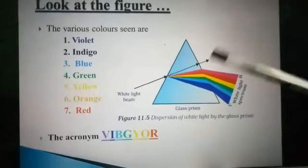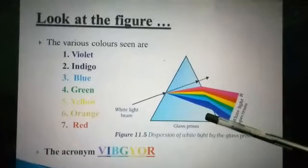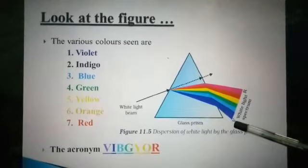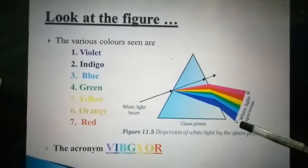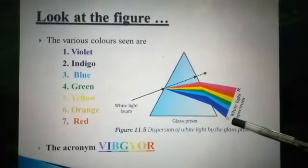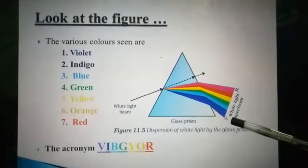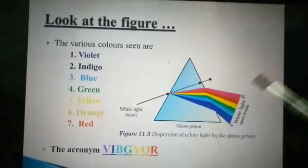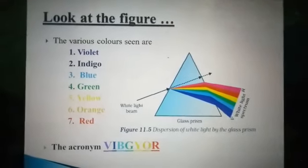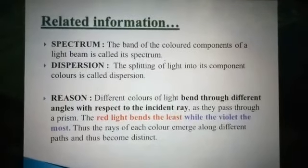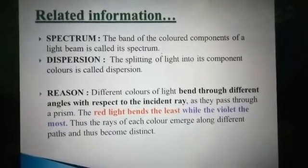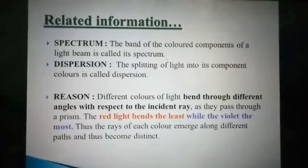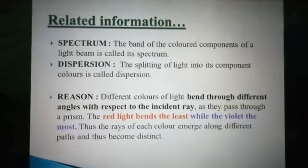This band of colors is known as a spectrum. Another term for you is dispersion — white light is split into different colors, this is known as dispersion. The definition: the band of colored components of a light beam is called the spectrum, and the splitting of light into its component colors is dispersion.